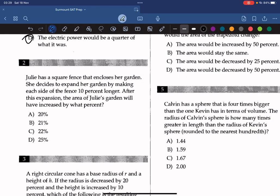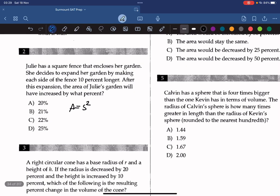Alright, so the area of the square is A equal to S squared, where S is the length of each side. So the area of the new side, since it's 10% longer, must be 1.1S squared, which would give us 1.21S squared, so it must be 21%.